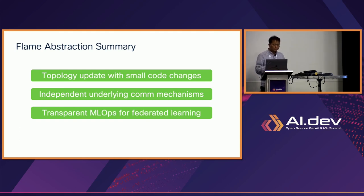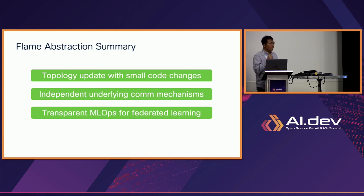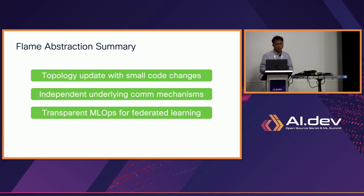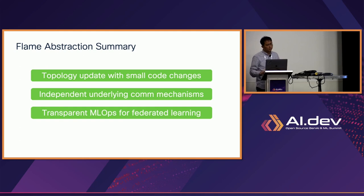To quickly summarize FLAME's abstraction: it provides easy topology updates by allowing small code changes. Because of the communication abstraction, we can use different communication mechanisms without disrupting the abstraction. These building blocks will help enable transparent ML operations for federated learning.